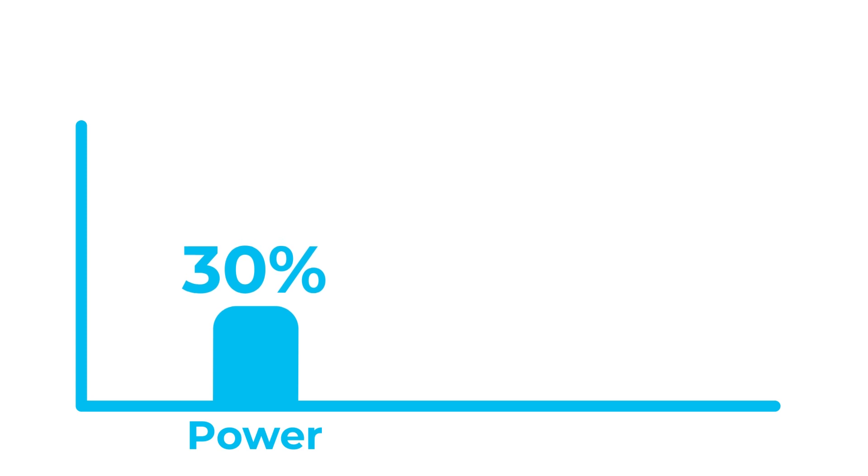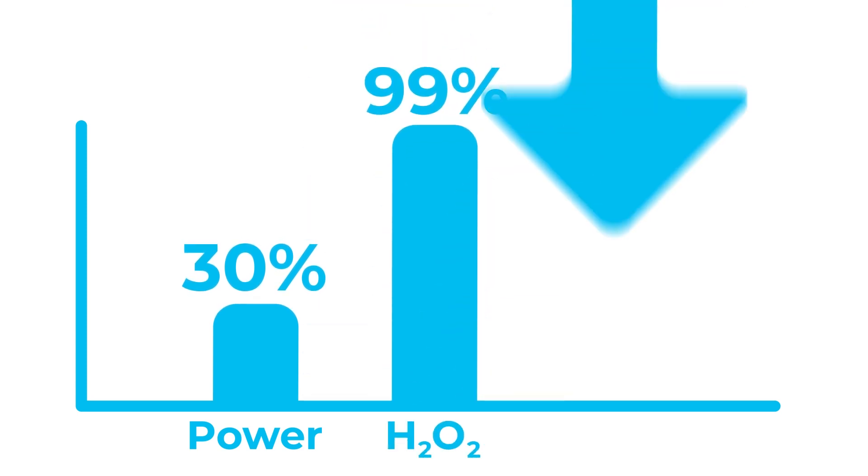It's really fast, which is how come E3 Speed Hyper can produce up to 40,000 portion packs per hour or 11 packs every second. And it lowers utilities costs significantly. You save 30% on power, 99% on hydrogen peroxide and up to 45% on water.